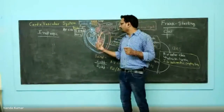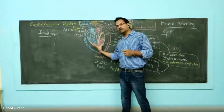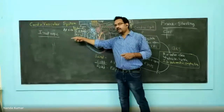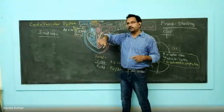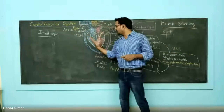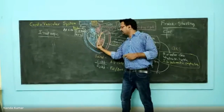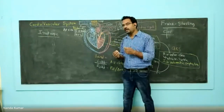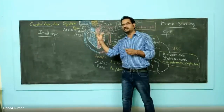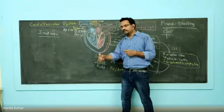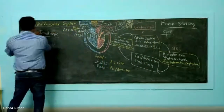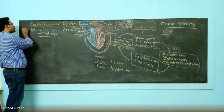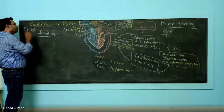Understand this numerically. Normally, when the ventricle contracts, 70 ml of blood comes out. But when beta-1 receptors are activated — either due to noradrenaline — the force of contraction increases, so instead of 70 ml, 100 ml comes out. That increased force of contraction is known as positive inotropic action, mediated by beta-1 receptors. Positive means increase in action.